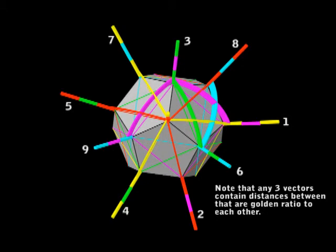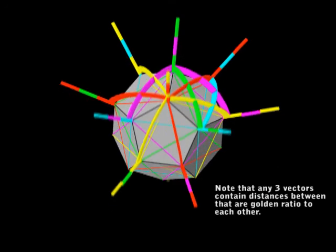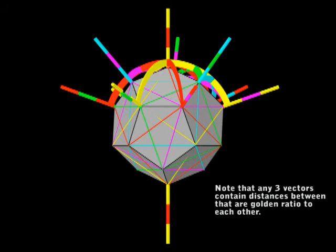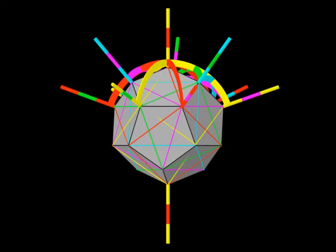And each vector is made up of 2 cubes, and one cube is rotated to be golden ratio to the other. So that's why I call them golden ratio vectors. They're just full of golden ratio.